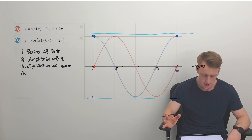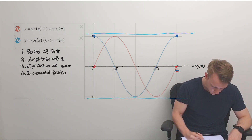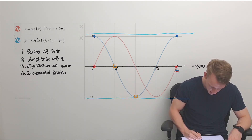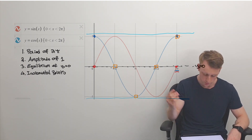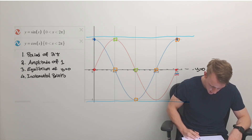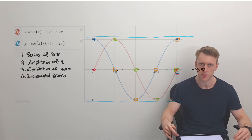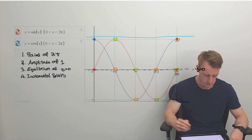The fourth thing to note is the incremental points — there are four of them per cycle. For cos of theta: first, second, third and fourth incremental points. For sine of theta, the same applies: first, second, third and fourth points. There are always four incremental points in a full loop of the trigonometric functions.